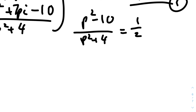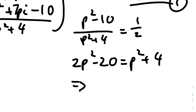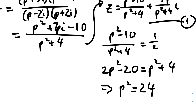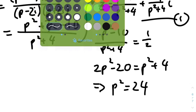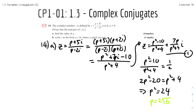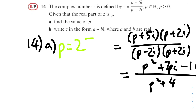Since the question states p > 0, p cannot equal -2√6. Therefore the only valid value is p = 2√6.